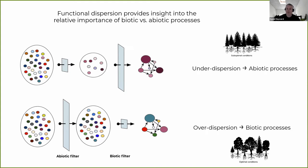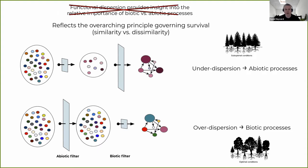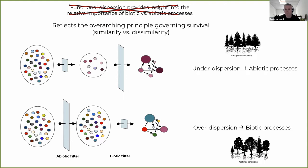One thing we can take from looking at dispersion is the relative importance of the core principle governing survival: do species survive by being similar or dissimilar from each other? I think this is a powerful way of viewing coexistence and survival because it's right on the cusp of applied and theoretical. You could manage for it or measure it. On first approximation, you could try to infer whether species coexist if you understood the role of similarity and dissimilarity in governing individual survival.